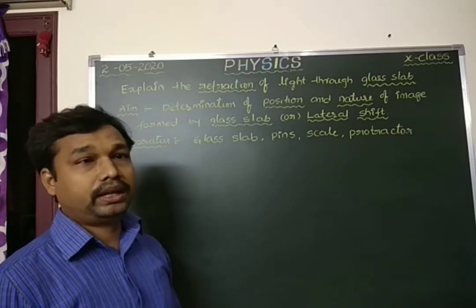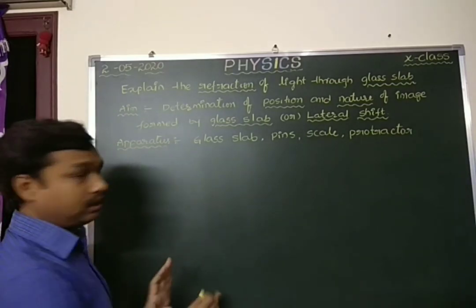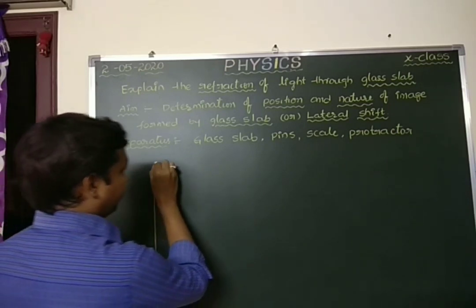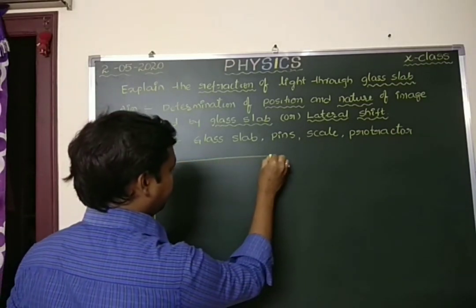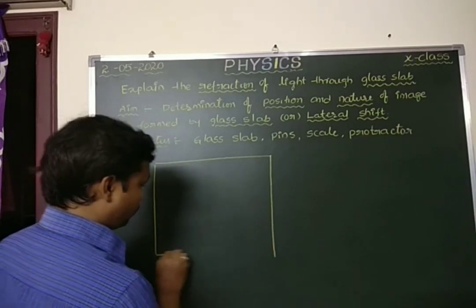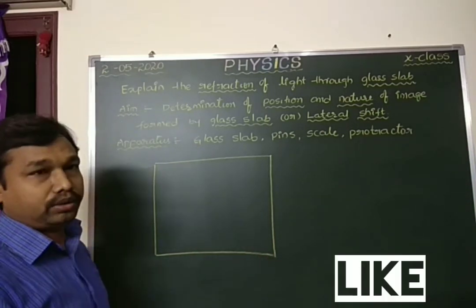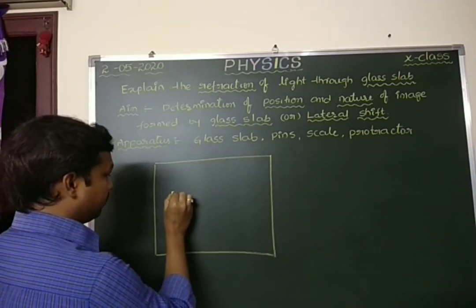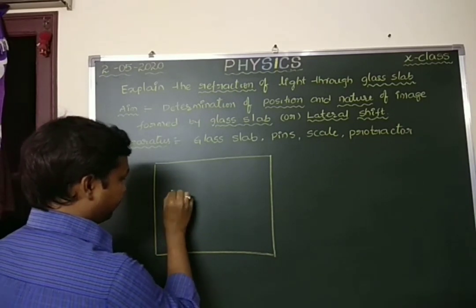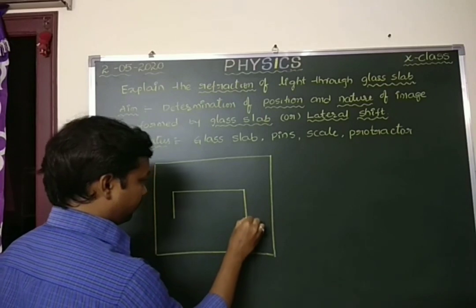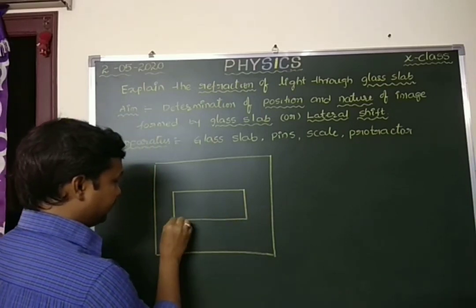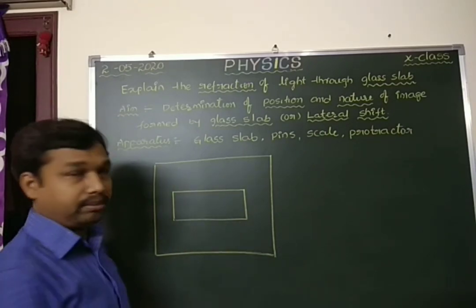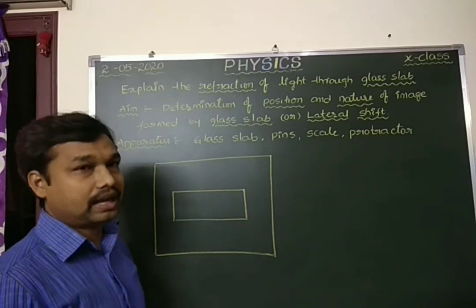What we need to do: take one white chart and place it over the table. Clamp it. After that, take a rectangular glass slab and place it over the paper in the center. After placing it, take a pencil and draw the margins of the glass slab.